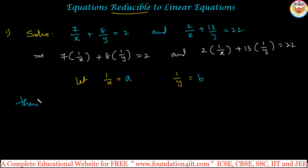Then the equation will be changed like this: 7 into 1 by x, that means 7a plus 8 into 1 by y, which is 8b equals 2. And here is also 2 into 1 by x, so 2 into a plus 13b equals 22.